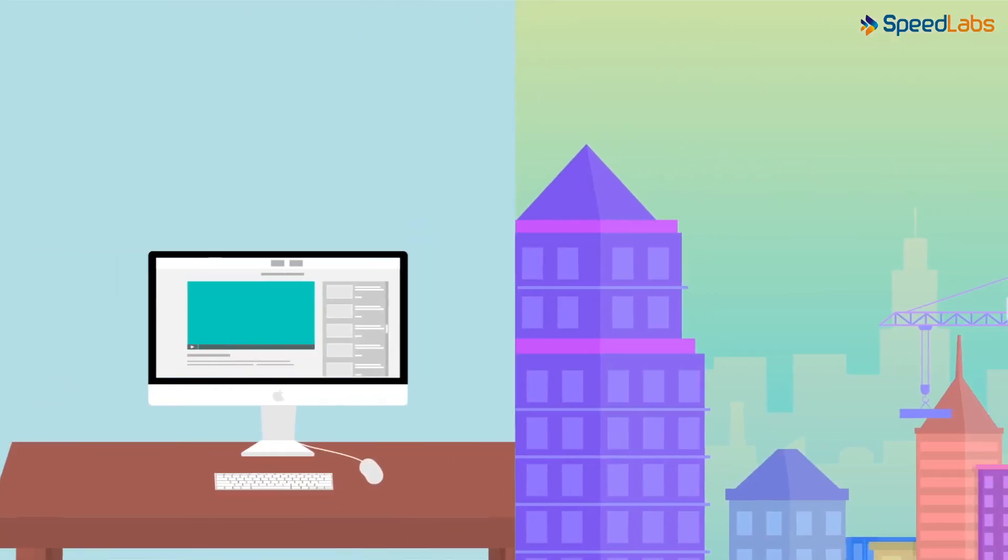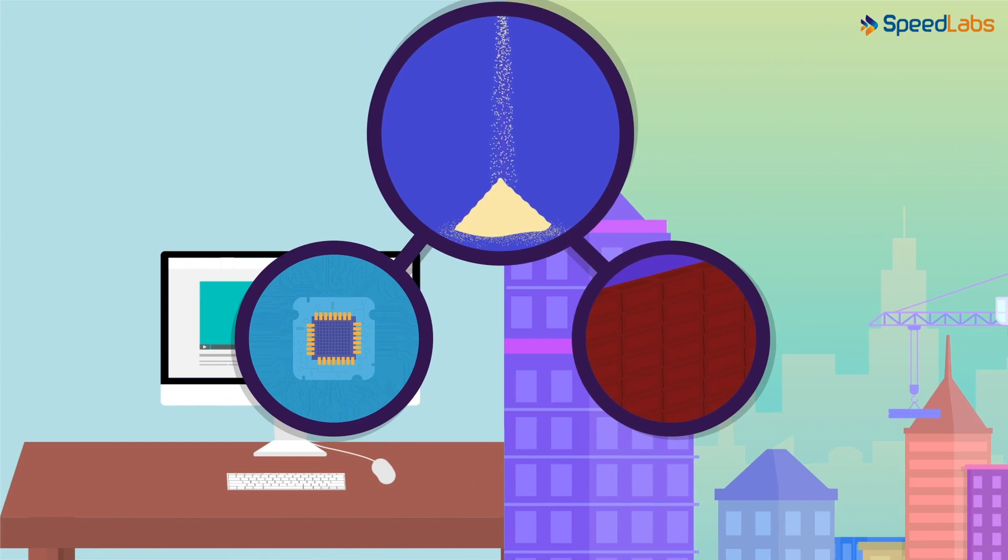If you notice, everything around us is made up of one or the other smaller entity. These small entities are called basic units.